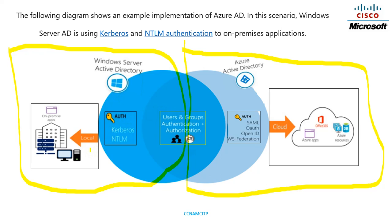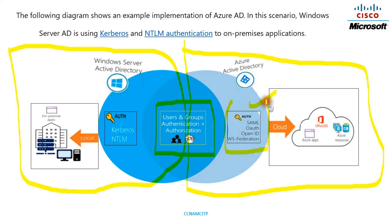On both platforms — local active directory and Azure Active Directory — we will have users and groups, and for those users and groups we need authentication and authorization. The mechanism can be different: in Windows Server Active Directory, authentication uses Kerberos and NTLM, while Azure Active Directory uses SAML, OpenID, and WS-Federation.